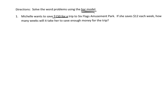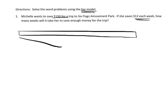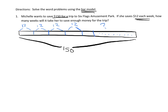Michelle wants to save $150 for a trip to Six Flags amusement park. If she saves $12 each week, how many weeks will it take her to save enough money? I'm going to think of this as a bar representing the $150, and she saves $12 each week. The question is: how many 12s do we need to equal 150? That's a division problem, so we're going to do 150 divided by 12.